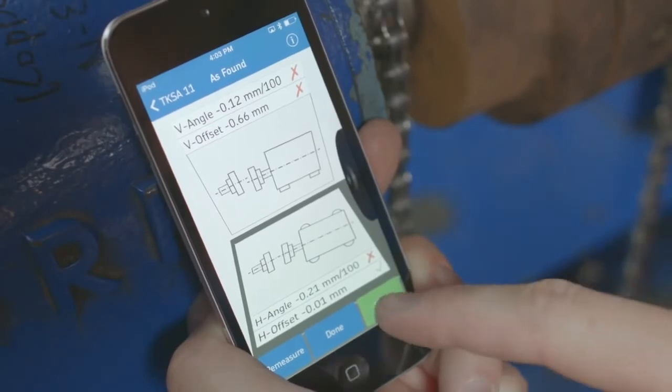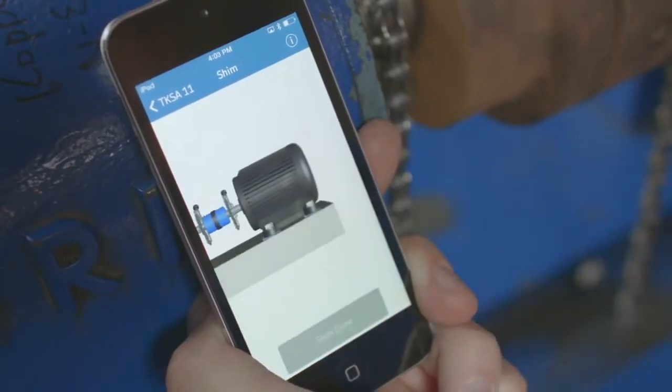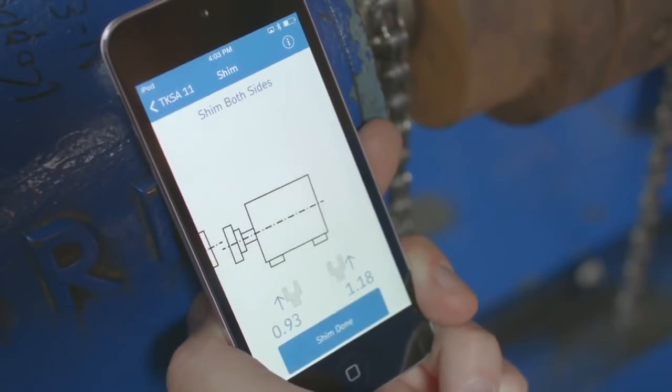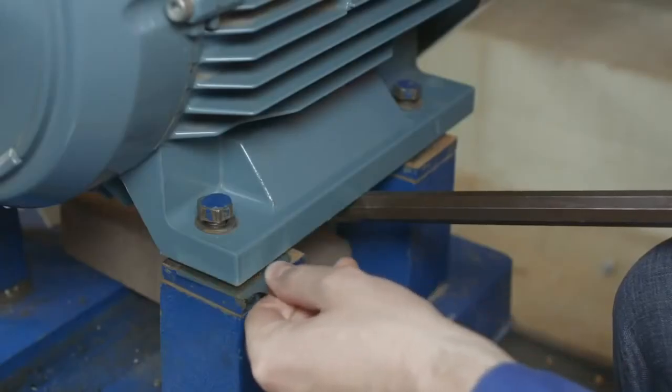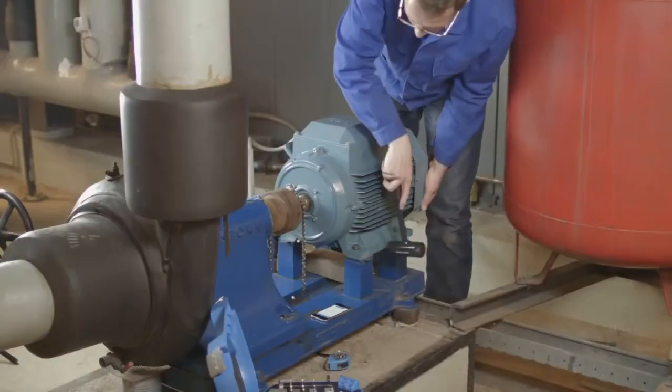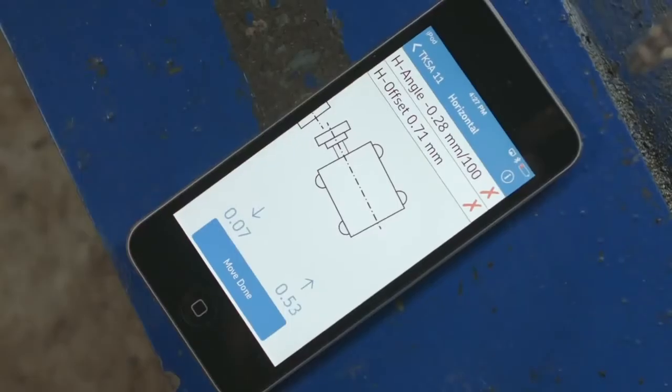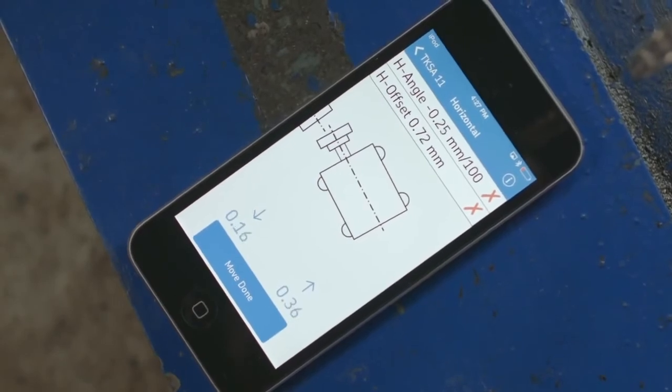After determining the current shaft misalignment, the app guides you through the alignment process. First, by showing what shims are needed for the vertical alignment and then which movements need to be performed for horizontal alignment. The live view helps you quickly achieve accurate positioning.